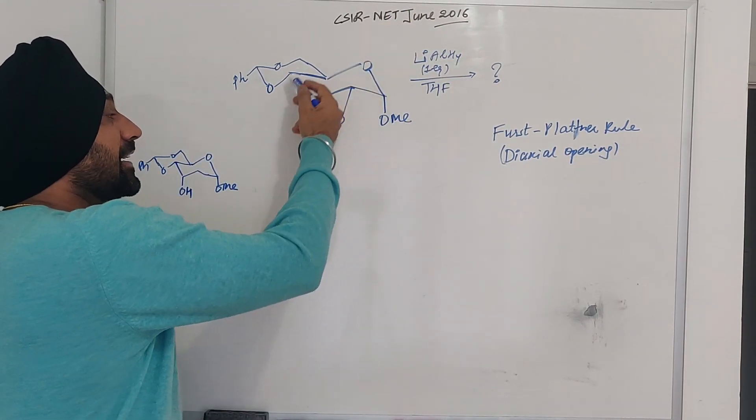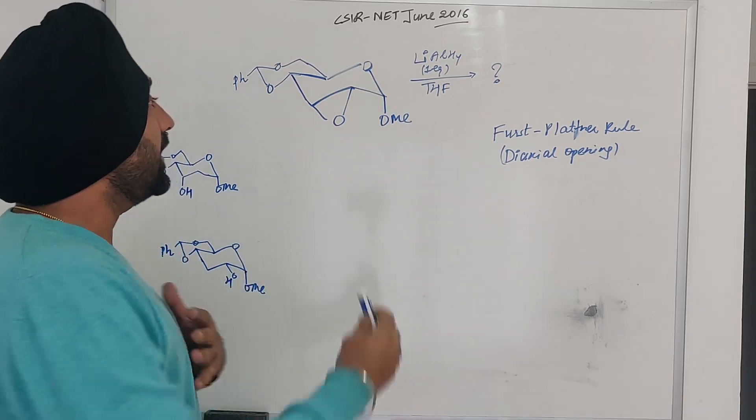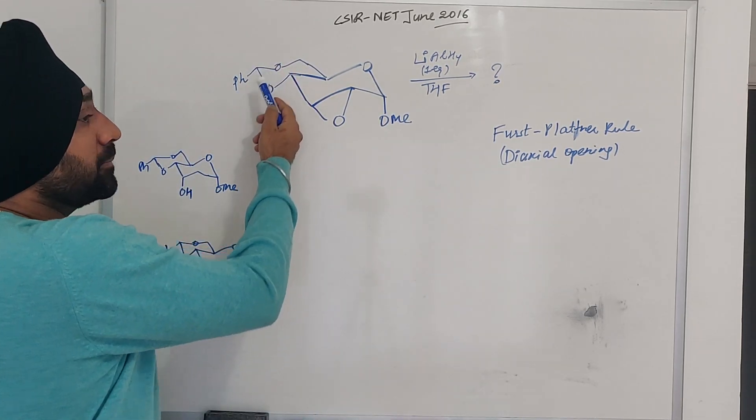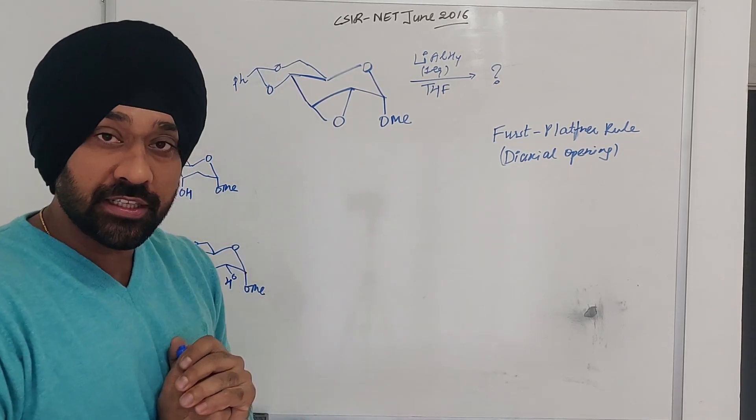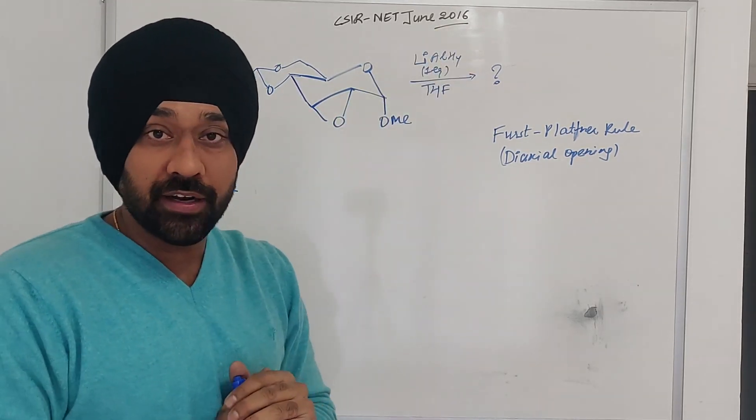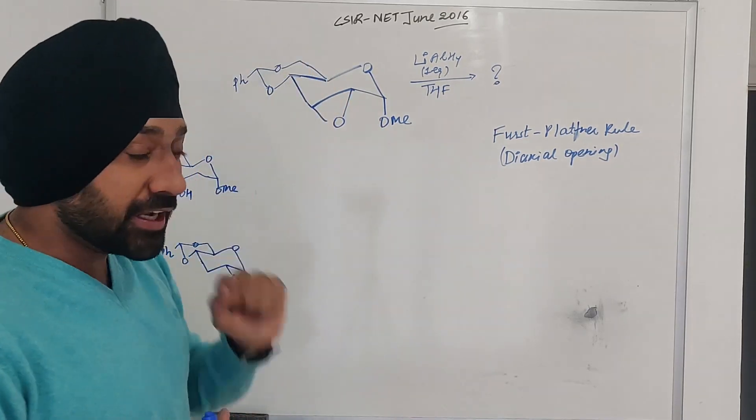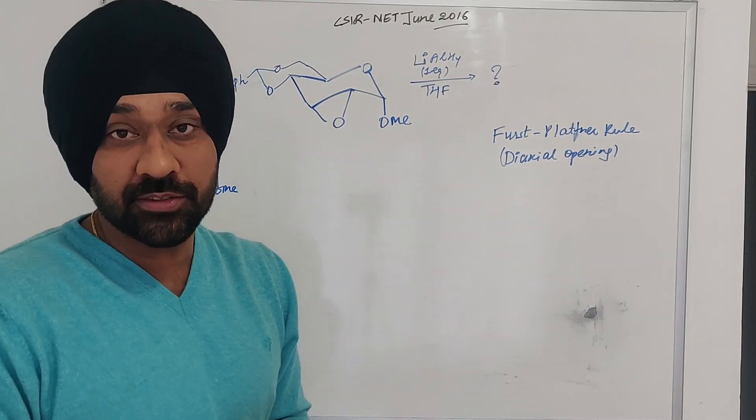What we had is this protected sugar, and here what we had is benzoylidine acetyl protection. It was our epoxide and we had lithium aluminum hydride to treat it. So how did we approach this problem?